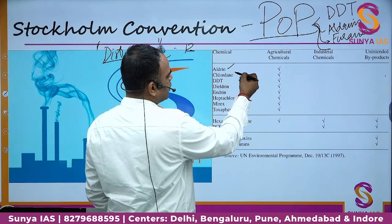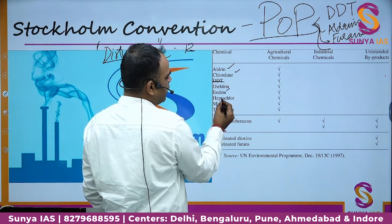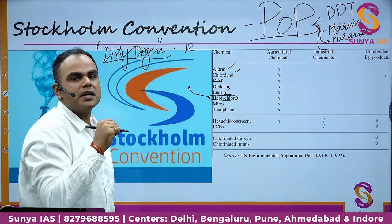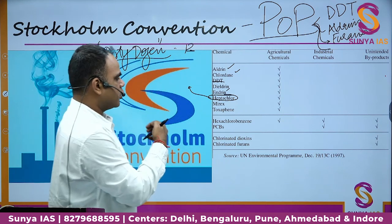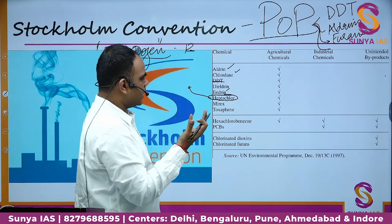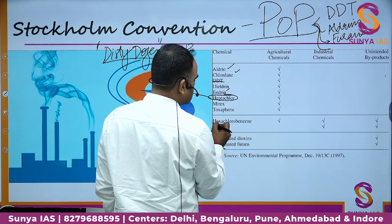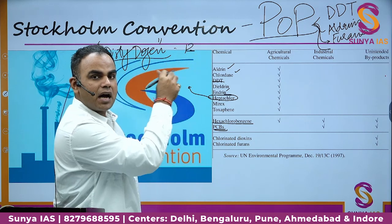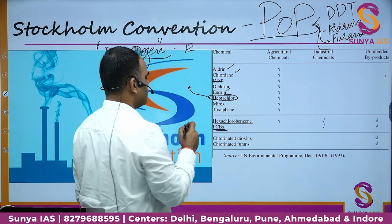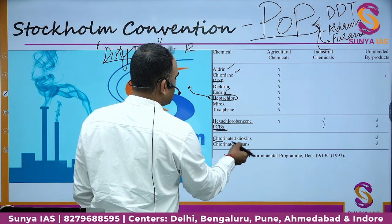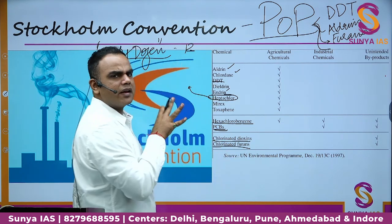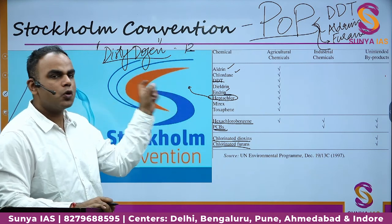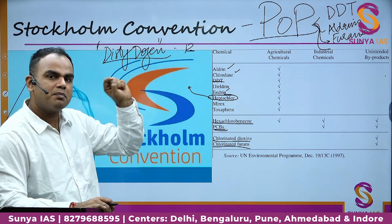Other POPs include aldrin, chlordane, DDT, endrin, heptachlor — which was mentioned in a UPSC question — hexachlorobenzene, PCBs, and chlorinated dioxins and furans. DDT and PCBs are very harmful in aquatic ecosystems. If given these names in a question, you should know these are persistent organic pollutants governed under the Stockholm Convention.